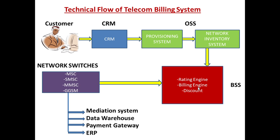The Billing Engine produces the raw data to generate a final invoice — the invoice which you get as a customer and have to pay. All the raw data like customer details, service details, and charges according to the plan are produced by this Billing Engine. Then there is Discount — if a particular customer is applicable for a particular discount, for example they have purchased a plan which has some discount, the adjustment or calculation of that discount is also done under BSS.